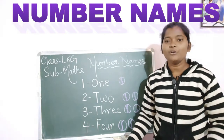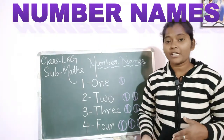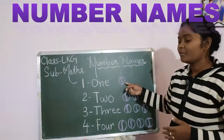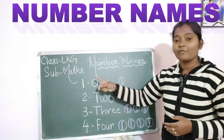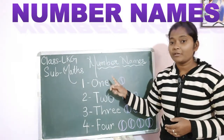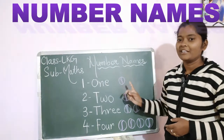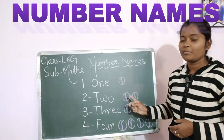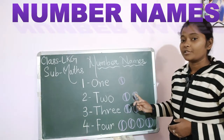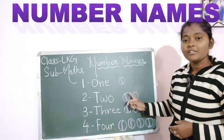Like this, you learn number names at your home. How many balls? 1 ball. What is the number name of 1? O-N-E — 1. Now see, how many balls? 2 balls. 1, 2.